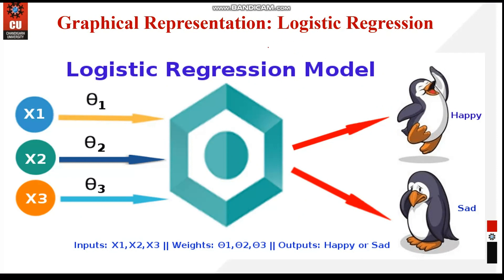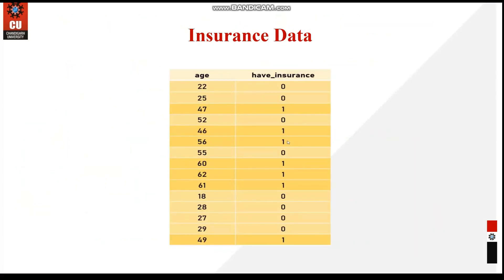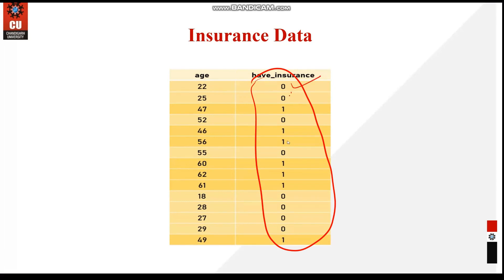When we represent logistic regression, it looks like a network where inputs x1, x2, x3 come in with weights theta1, theta2, theta3 on each value, and the output — based on those weighted inputs — predicts something like whether a person is sad or happy. For example, using age as the independent variable x and insurance status (0 for no, 1 for yes) as the dependent variable y.